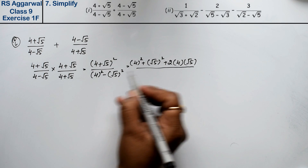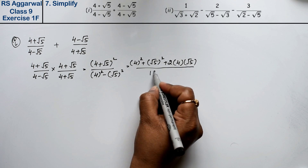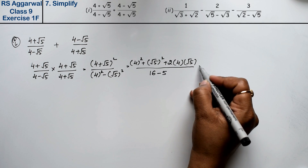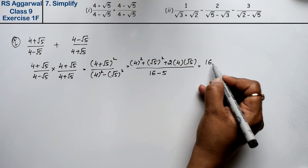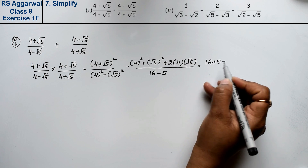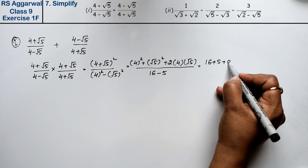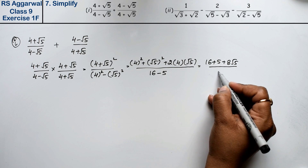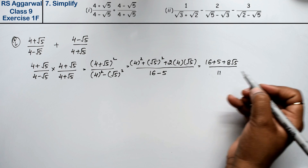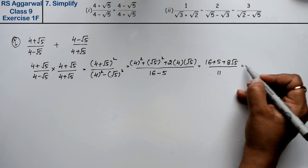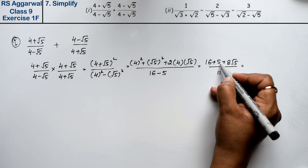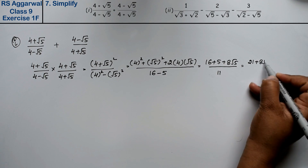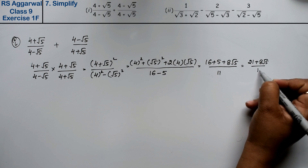The denominator: 4² = 16, and √5 × √5 = 5, so 16 - 5 = 11. The numerator: 16 + 5 + 8√5 = 21 + 8√5. So the first fraction simplifies to (21 + 8√5)/11.